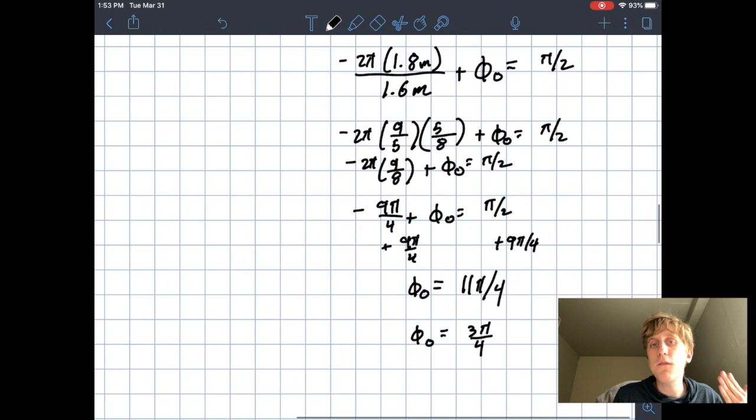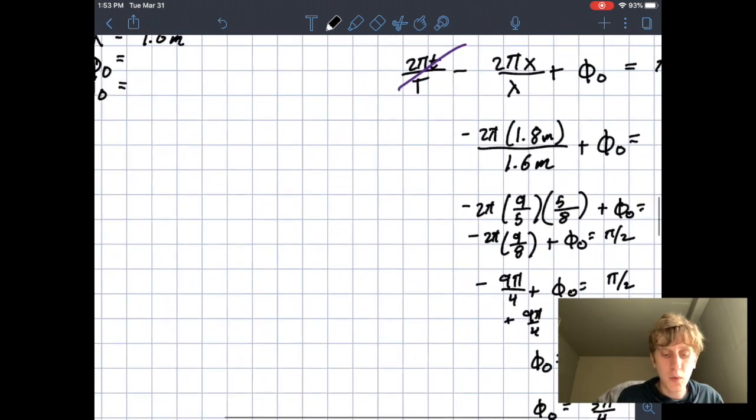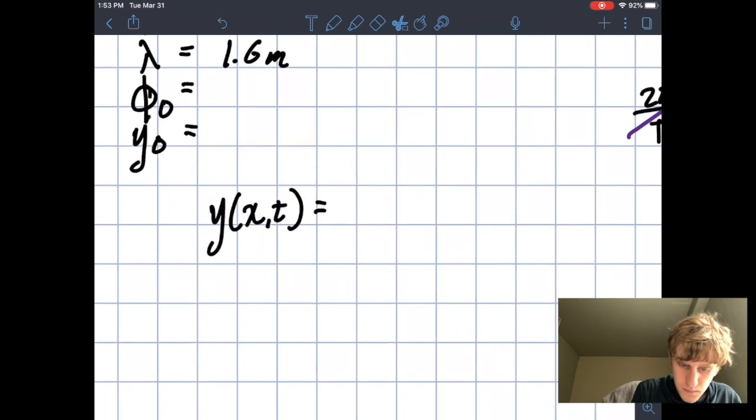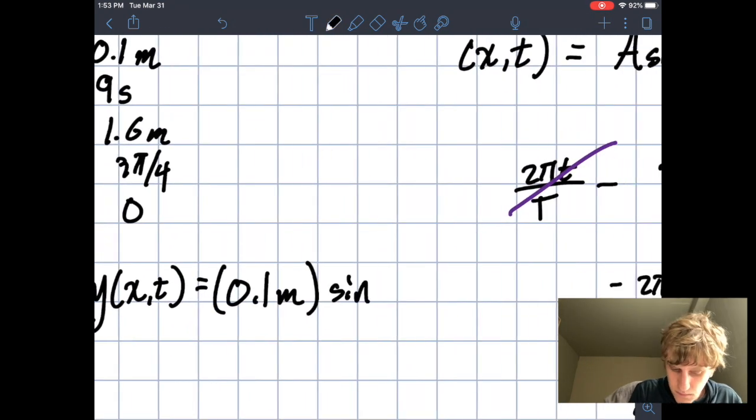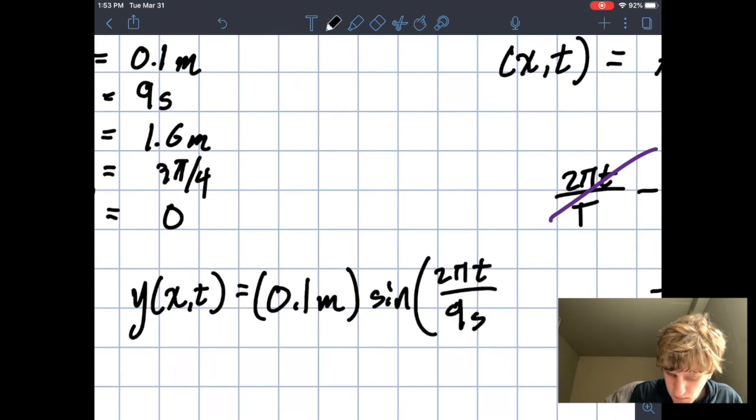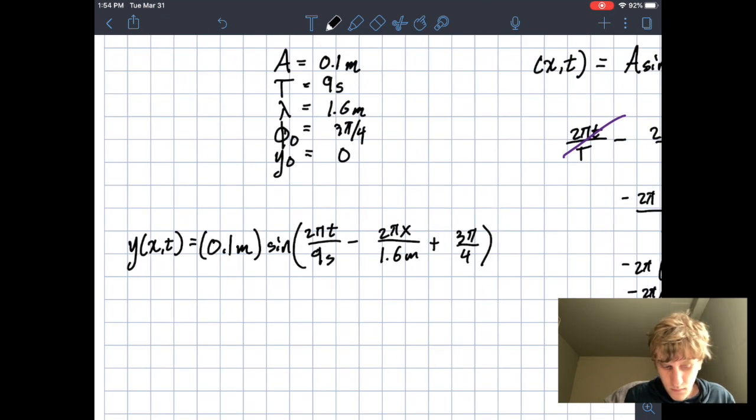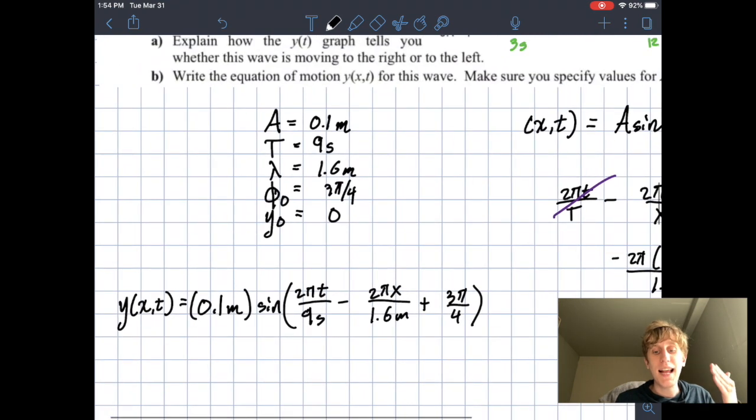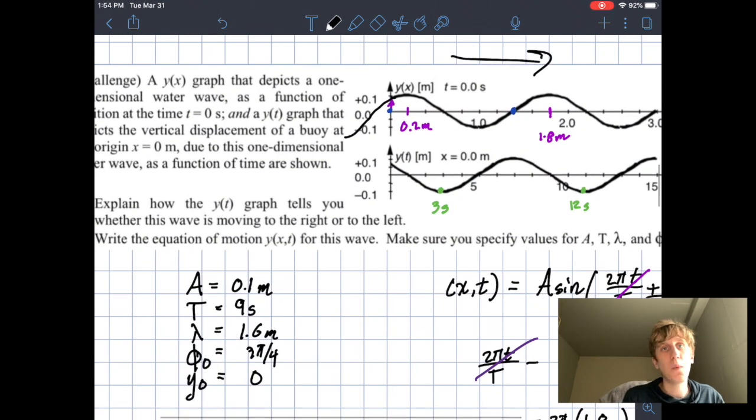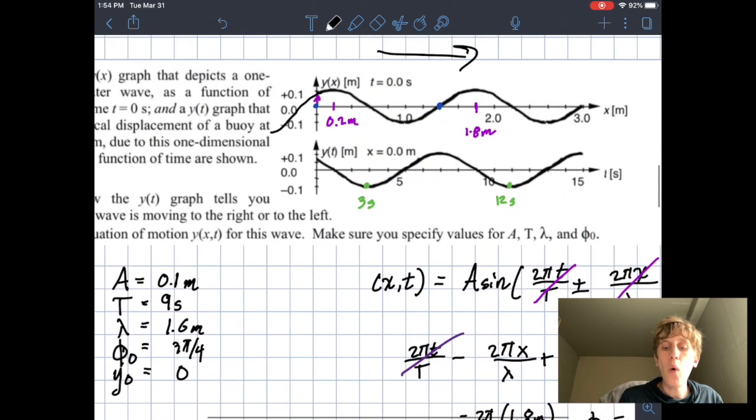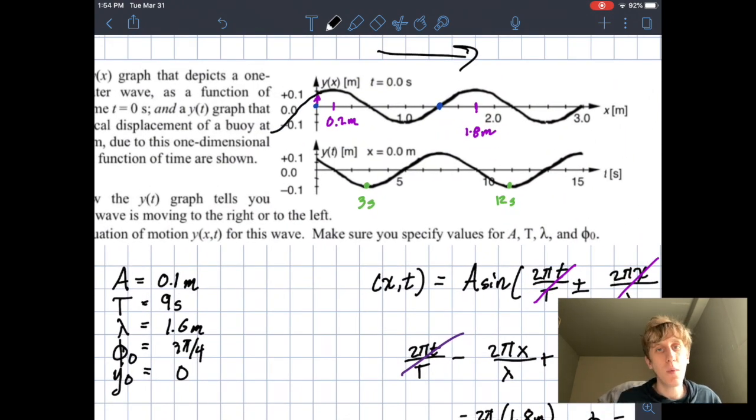So now we can write out our full wave equation for this wave. And there we have it, the complete wave equation. This wave equation specifies exactly this wave that we were given in the problem. Meaning using only this, we could always reproduce exactly what we have been given here without any additional information.